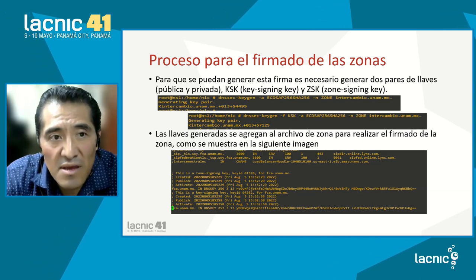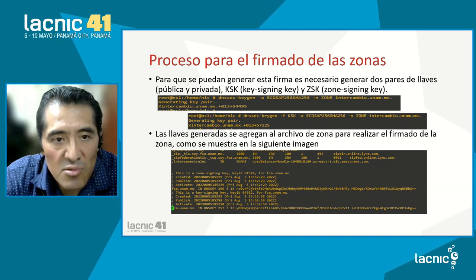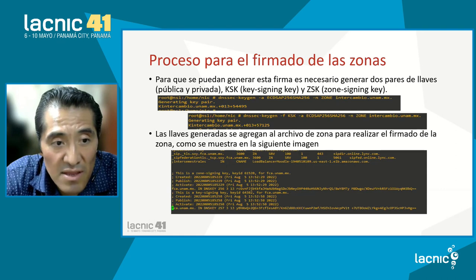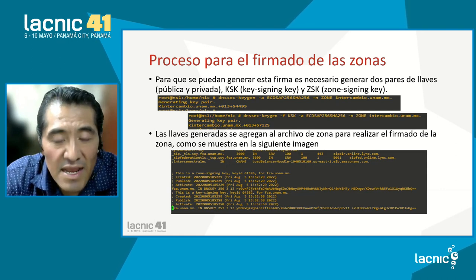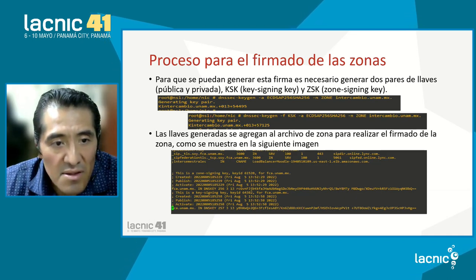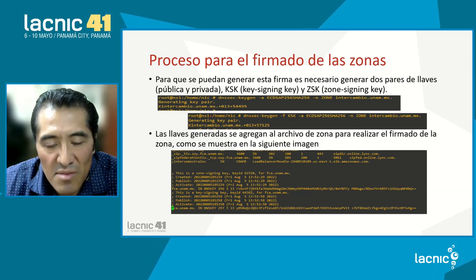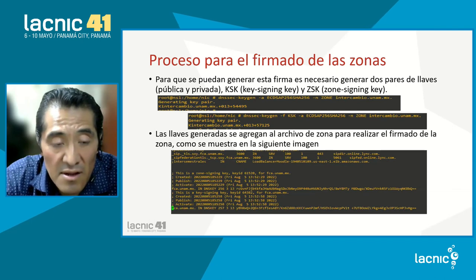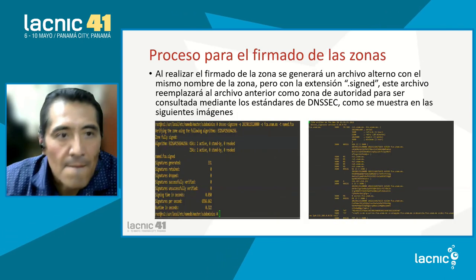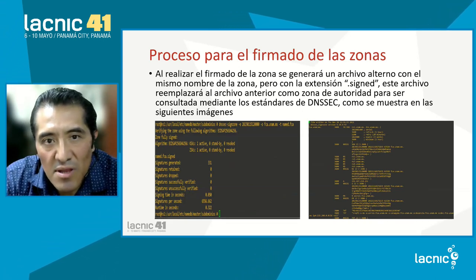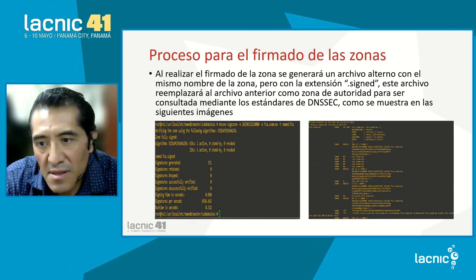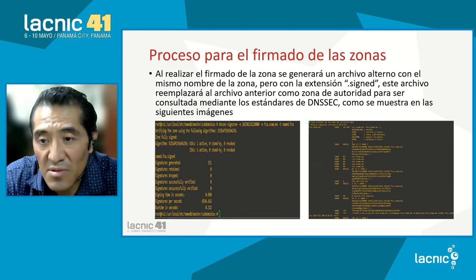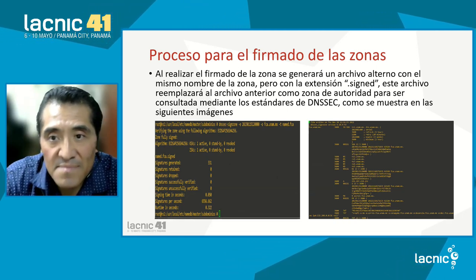So we generate the signatures — one public and one private key — and we do it manually. We generate that couple of keys. The keys are added to the zone file, as we can see in the picture, to sign the zones. This is how we create those keys for a domain — in the case of FCA, the accounting organization. We create this file. When we sign, it shows the file that has already been signed correctly with DNSSEC.